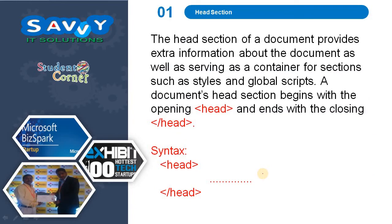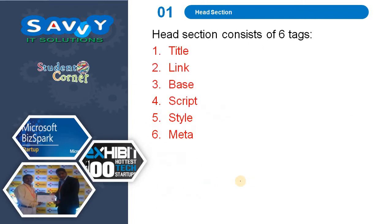The head section of a document provides extra information about the document, as well as serving as a container for sections such as styles and global scripts. A document head section begins with the opening head tag and ends with the closing head tag. In between, we need to specify the 6 tags. The head section consists of 6 tags.